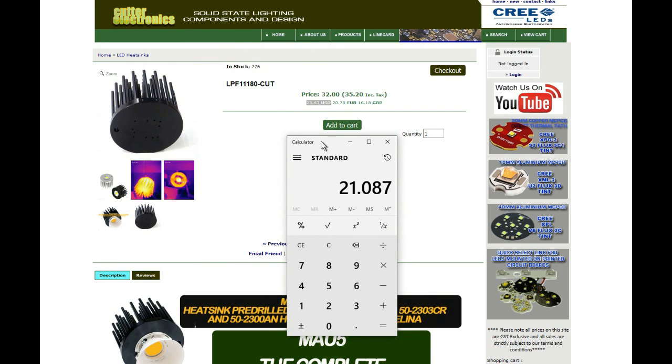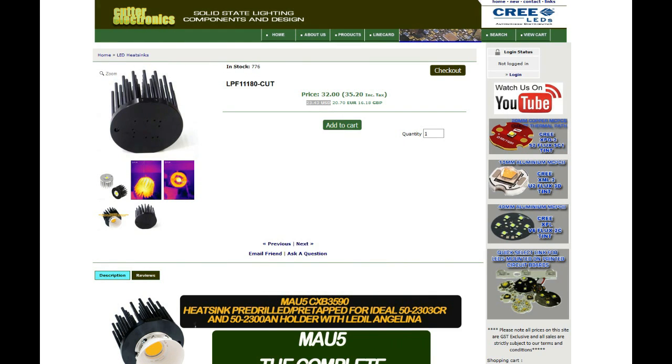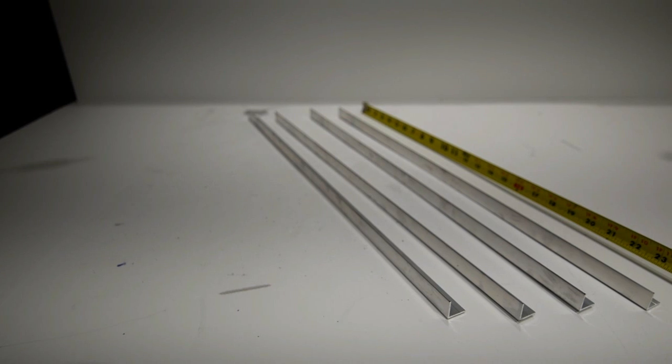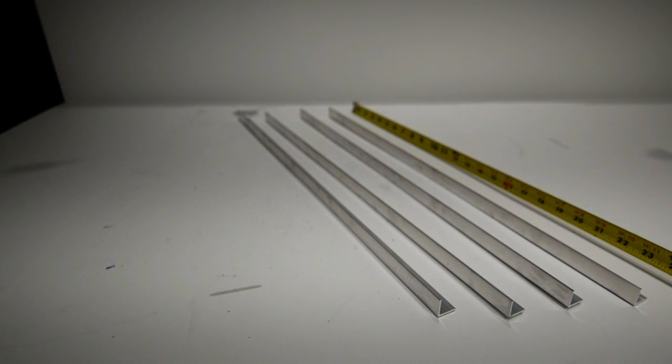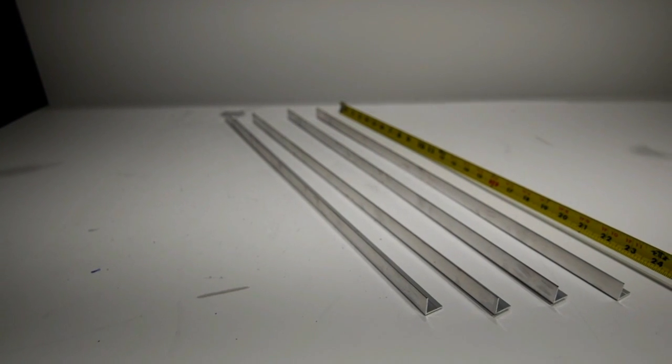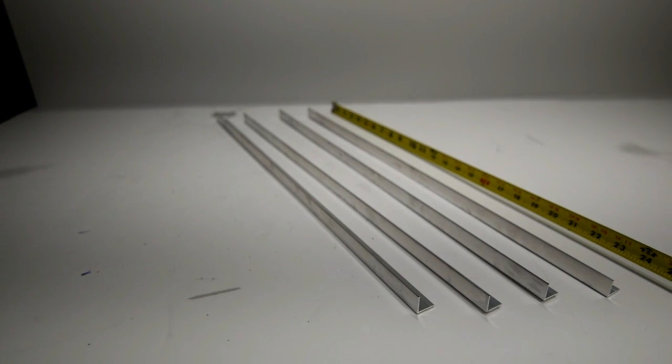They come down to 21 dollars and eight cents if you use the discount code CutAndRoll, that's C-U-T-1-T and R-O-L-L, all one word, so use that at checkout.